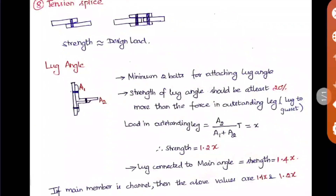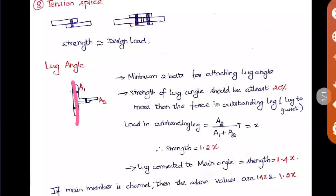The next topic is the lug angle. The lug angle is used to increase the efficiency of the outstanding leg. We already saw single angle and legs — the outstanding leg concept in the previous chapter. I have drawn a diagram here; consider a plate with an angle, which is called a normal angle, used for connections like beam-to-joint connections.